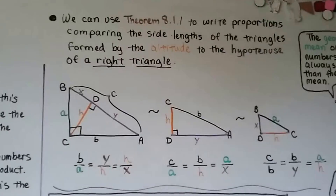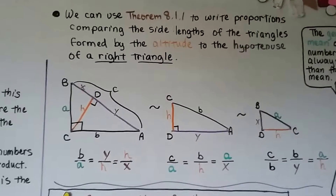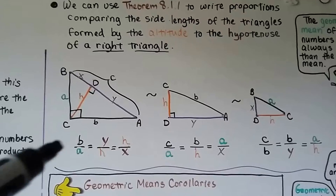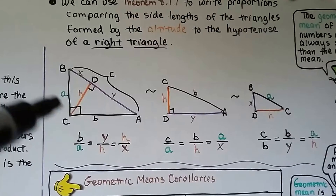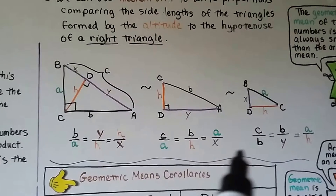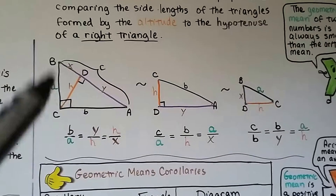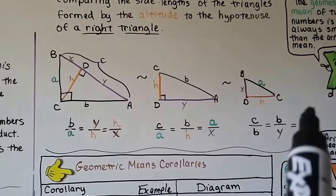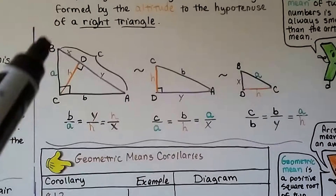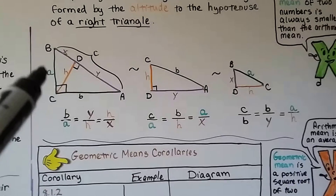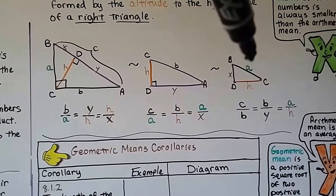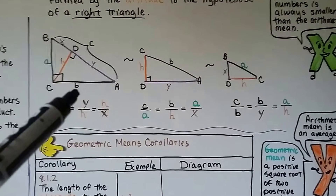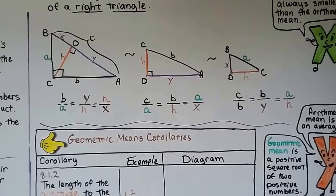Using theorem 8.1.1, we can write proportions comparing side lengths of the triangles formed by the altitude to the hypotenuse. For the similar triangles, C over A equals B over H equals H over X, where corresponding sides are proportional. Also, C over B equals B over Y equals A over H.